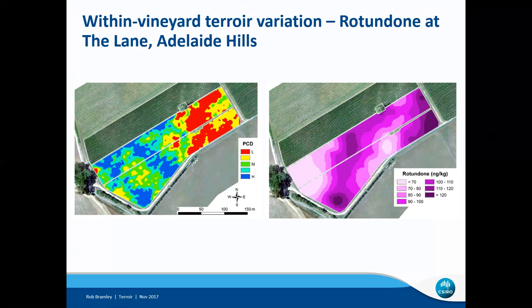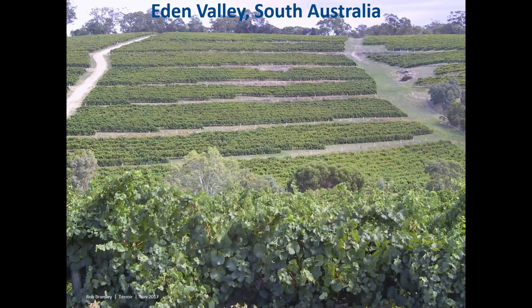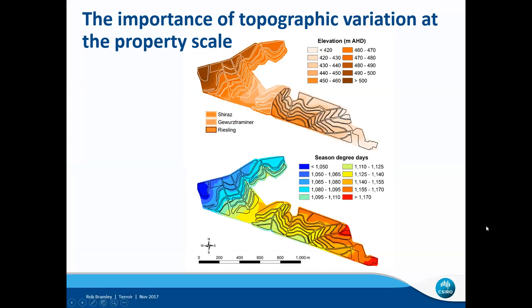What about at the within-property scale? This is a photo of part of a vineyard in the Eden Valley. There's almost 100 metres elevation from the top of this hill to the bottom of it, and it would be surprising if there wasn't some variation in terroir between the top and the bottom of the slope. We investigated that. The slope is running up and down this line here, and we've derived an elevation model of this property — which is about 62 hectares altogether, of which about 39 were under vine.